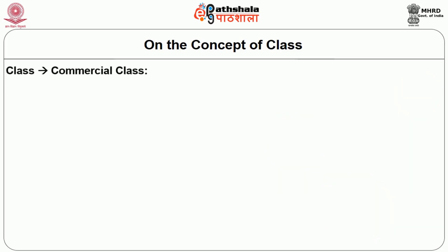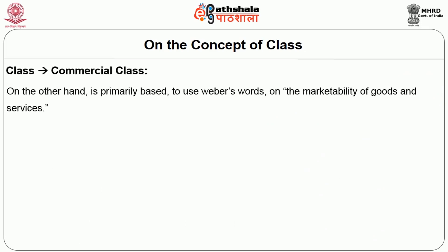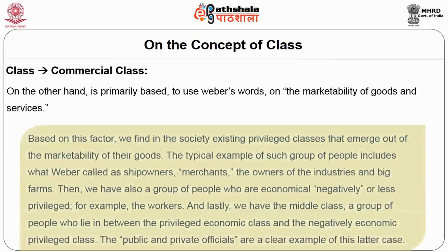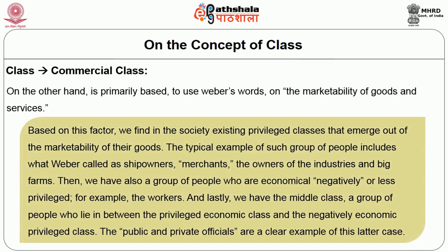Commercial class, on the other hand, is primarily based — to use Weber's word — on the marketability of goods and services. Based on this factor, we find in society existing privileged classes that emerge out of the marketability of their goods. The typical example includes what Weber calls ship owners, merchants, and owners of industries and big farms. Then we also have a group of people who are economically negatively or less privileged, for example the workers. And lastly, we have a middle class — a group of people who lie between the privileged economic class and the negatively economically privileged class. Public and private officials are a clear example of this latter case.